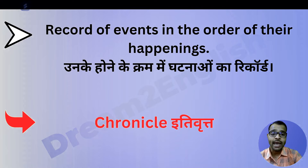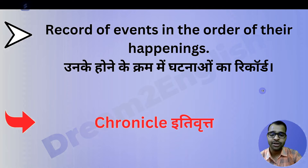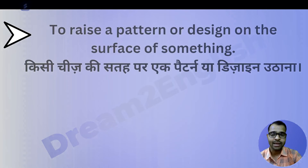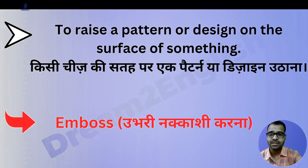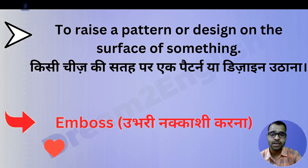Next one is record of events in the order of their happenings — unke hone ke kram mein ghatnaon ka record — this is called 'chronicle' — itibratt. Next one is to raise a pattern or design on the surface of something — kisi cheez ki satah par ek pattern ya design uthana — this is called 'emboss' — ubhari nakashi karna.